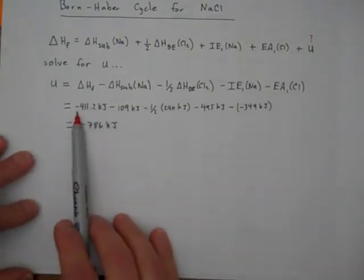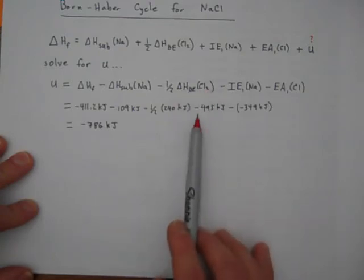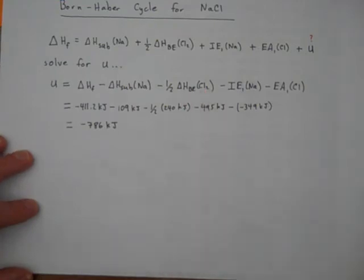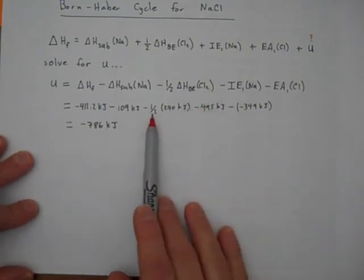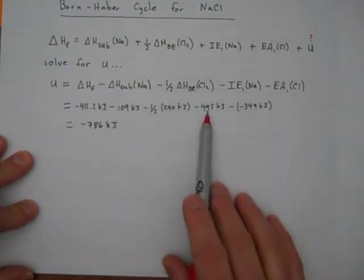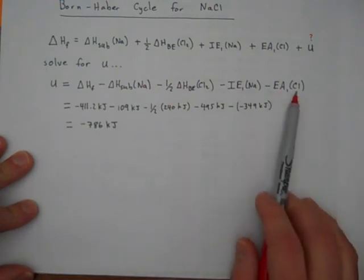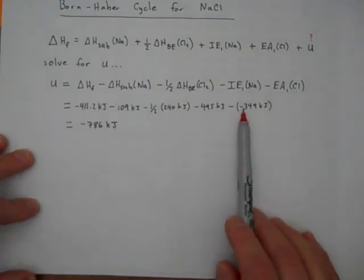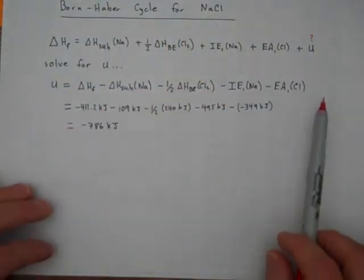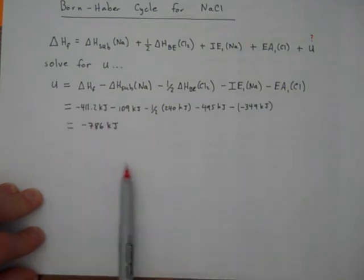The delta H of formation is negative 411.2 kilojoules. Sublimation is negative 109 kilojoules. The bond enthalpy is 240 kilojoules, the amount of energy to break one mole of those bonds. But we're only breaking half a mole, so multiply by one half. Then the ionization energy, we subtract 495, the energy to pull one mole of electrons off sodium. Last, the electron affinity is negative 349. Energy is released when you stick an electron onto the chlorine atom. That electron is happier because it can see the positive core of the chlorine atom. Doing the math, you end up with negative 786 kJ for lattice energy.